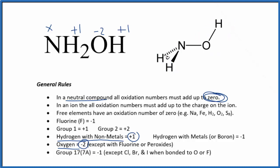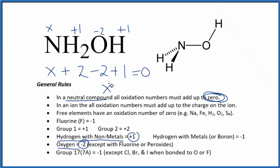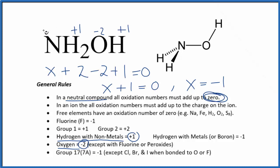So we have: x plus one times two, that'll be two, minus two, plus one equals zero. So x plus one equals zero. Add one to both sides — x will equal minus one. So the oxidation number on the nitrogen in NH₂OH is minus one. If you add all these numbers up, you'll get zero.